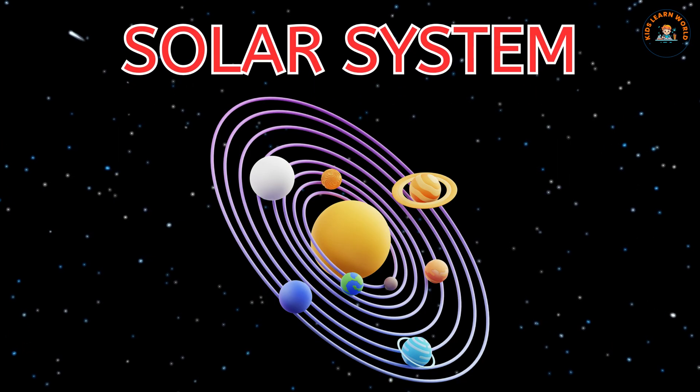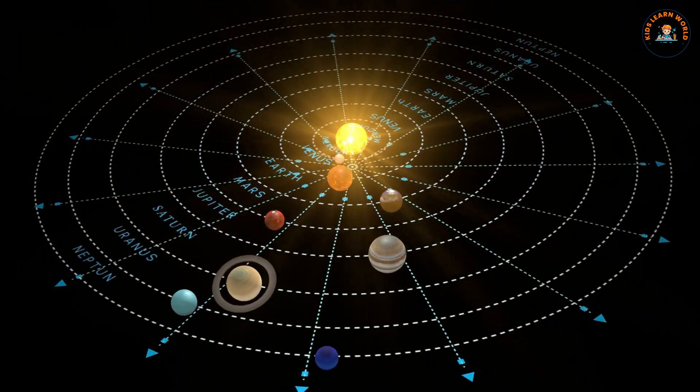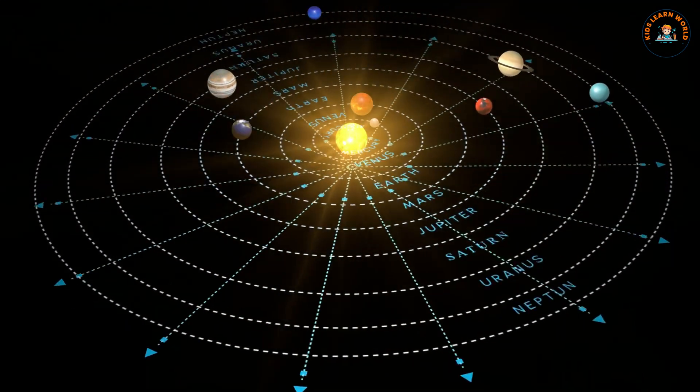This is the solar system. It's our space neighborhood with the sun, eight planets and more.